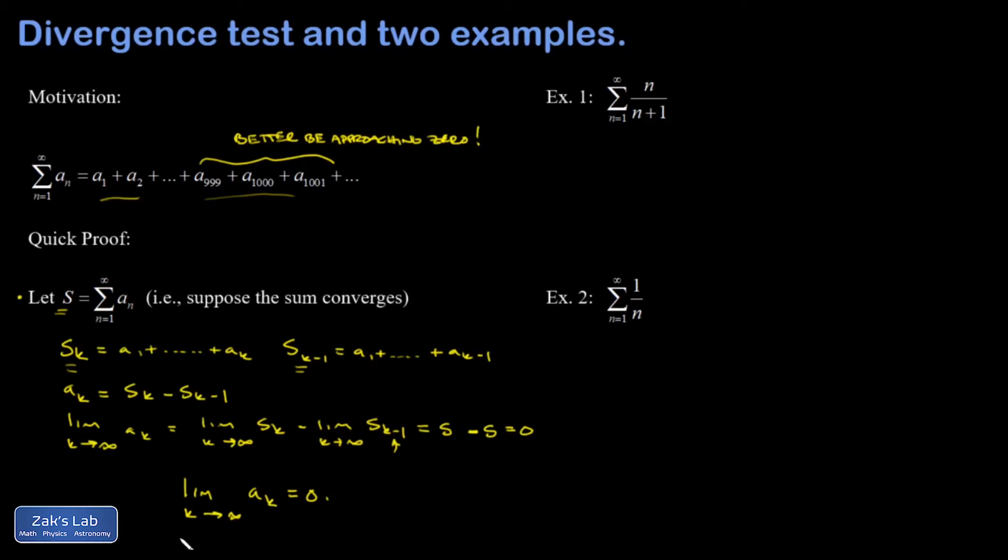So how do we put this into use? Look at example one. I have a sum of n over n plus one as n goes to infinity, and I'm going to look at the limit as n gets large of the nth term.